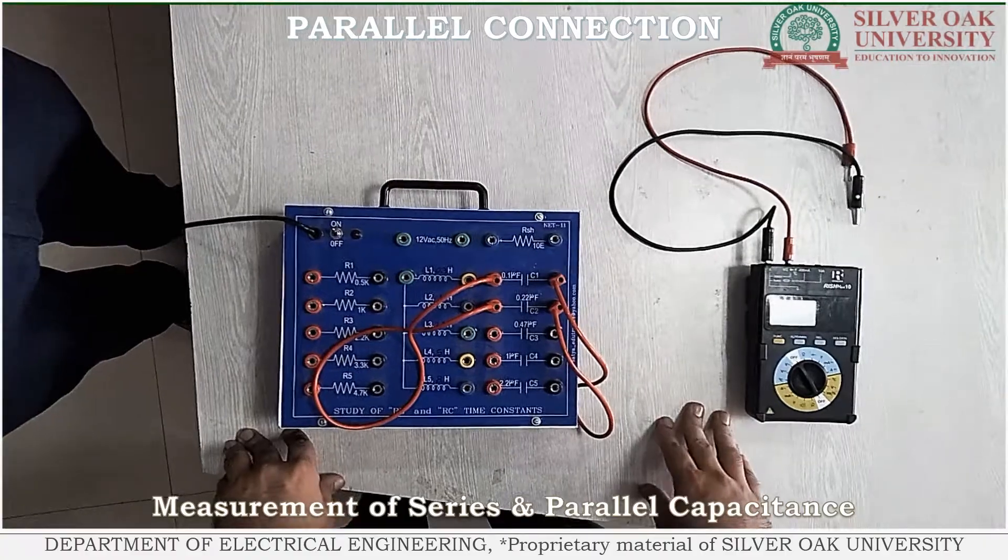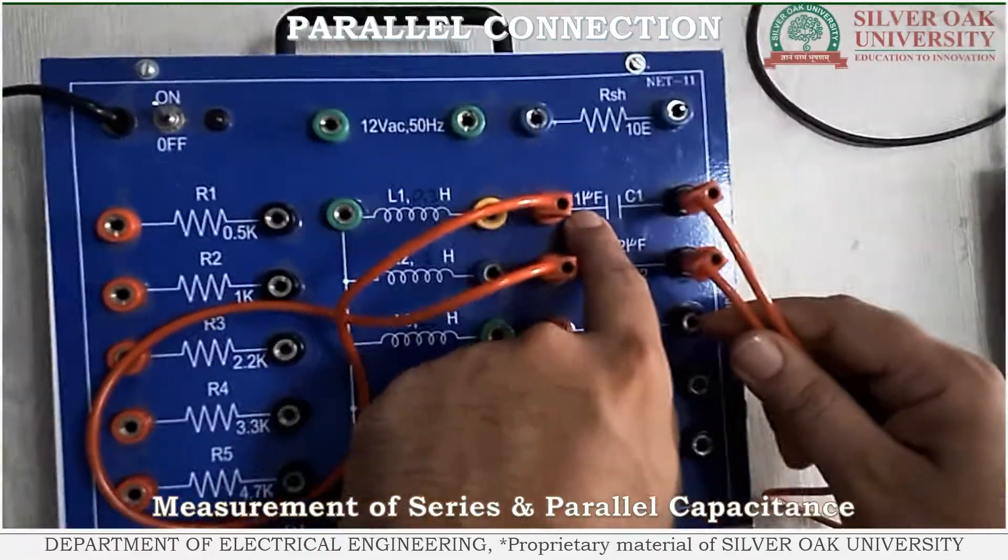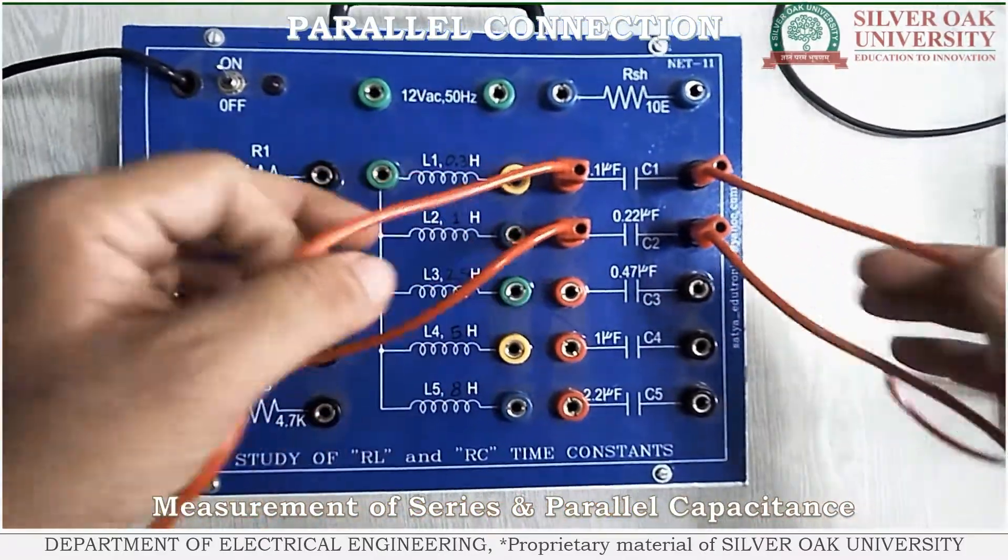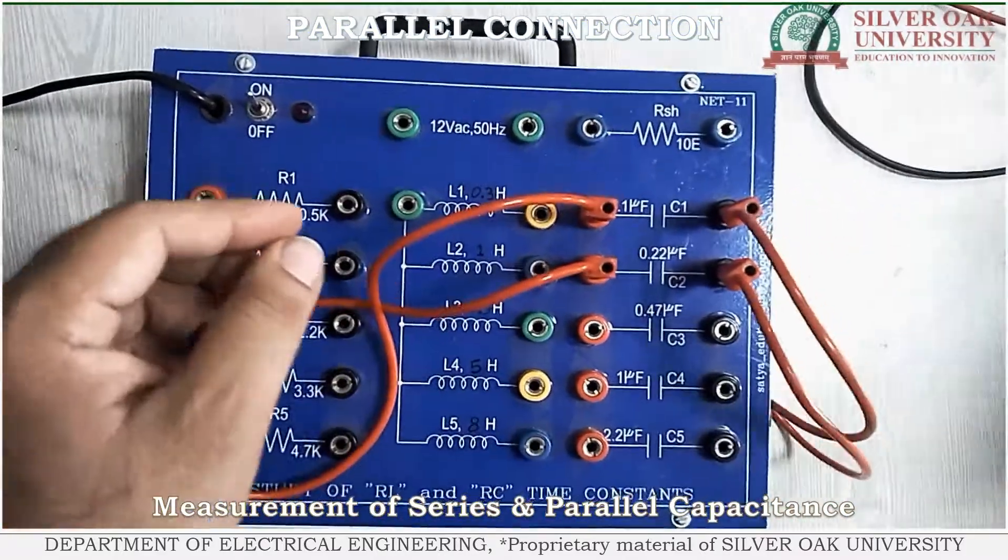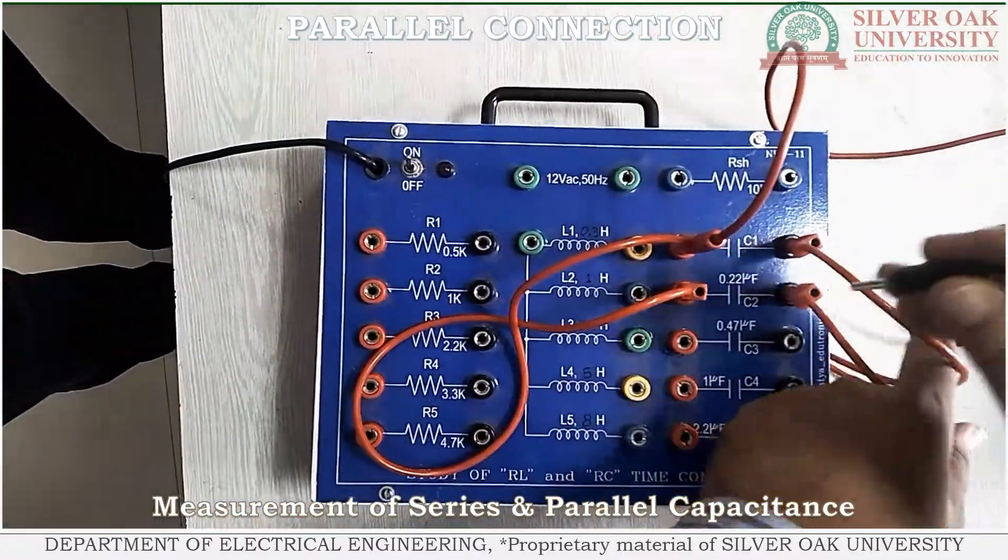As you can see here we have connected capacitor 1 (0.1 microfarad) and capacitor 2 (0.22 microfarad) parallel to each other. Now, we will utilize this multimeter to measure their capacitance.